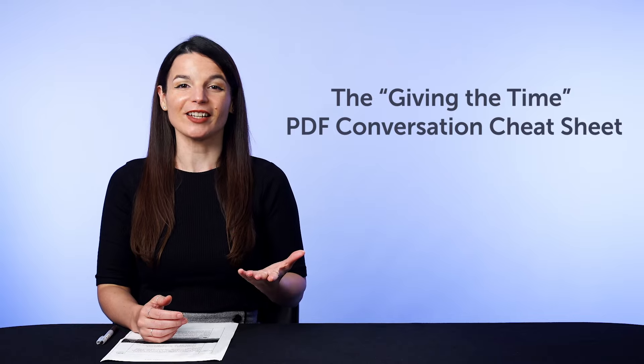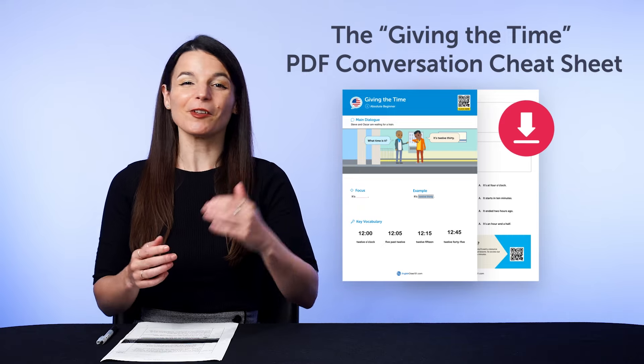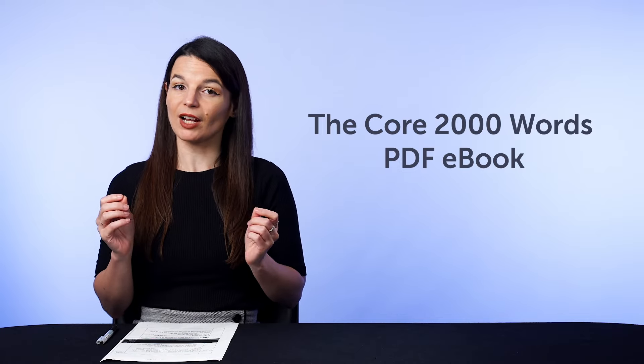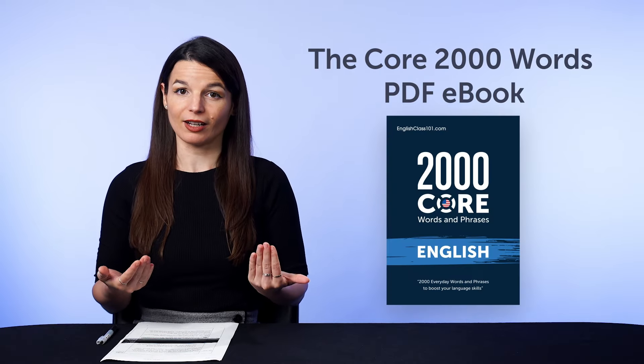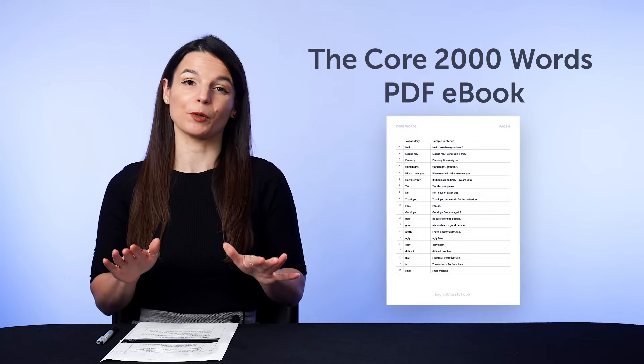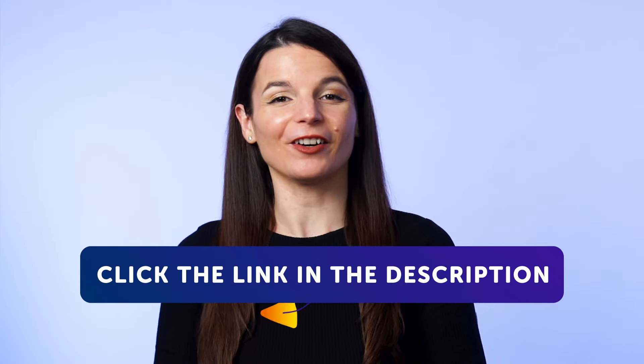Here are this month's new lessons and resources — be sure to download these before we take them down in a few days. First, the 'Giving the Time' PDF Conversation Cheat Sheet — this brand new cheat sheet will teach you how to ask for and give the time fluently. And second, the Core 2000 Words PDF eBook, which is usually sold at our store but is available free for the next few days. To get your free resources, click the link in the description below right now. They're yours to keep forever.